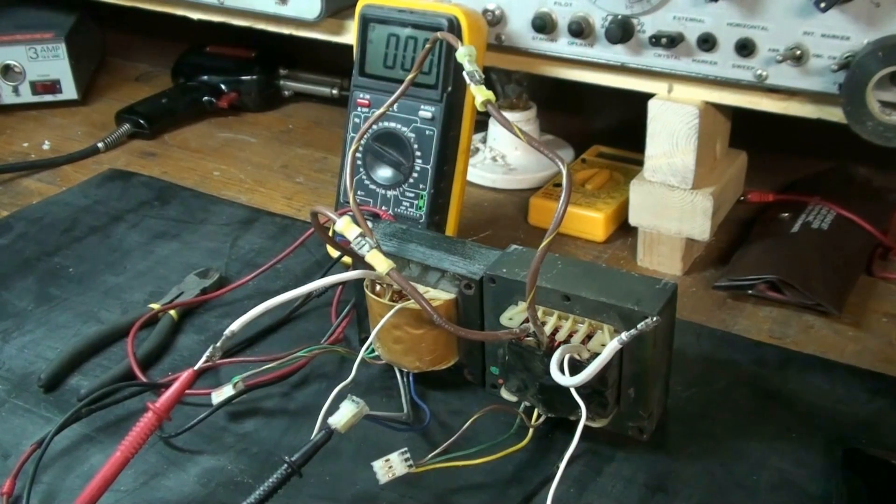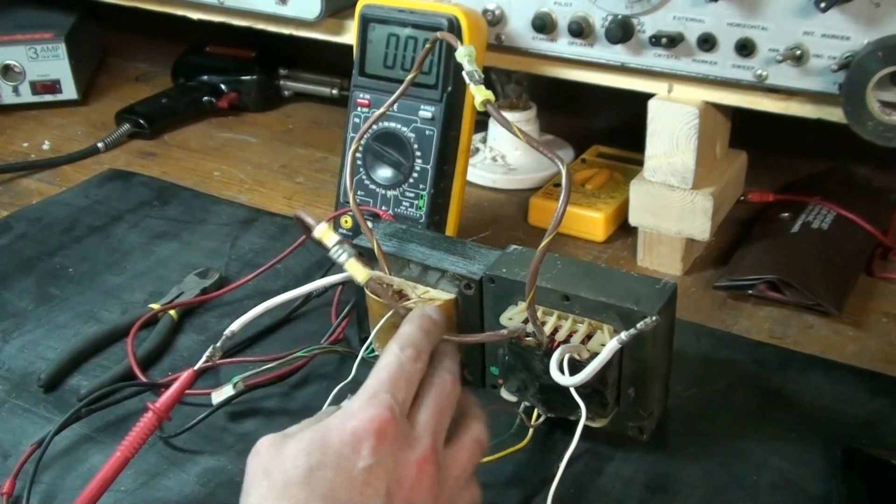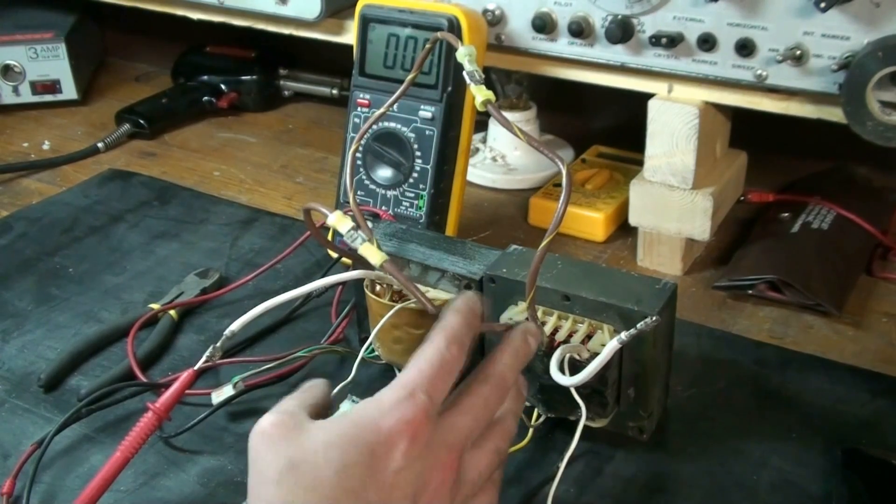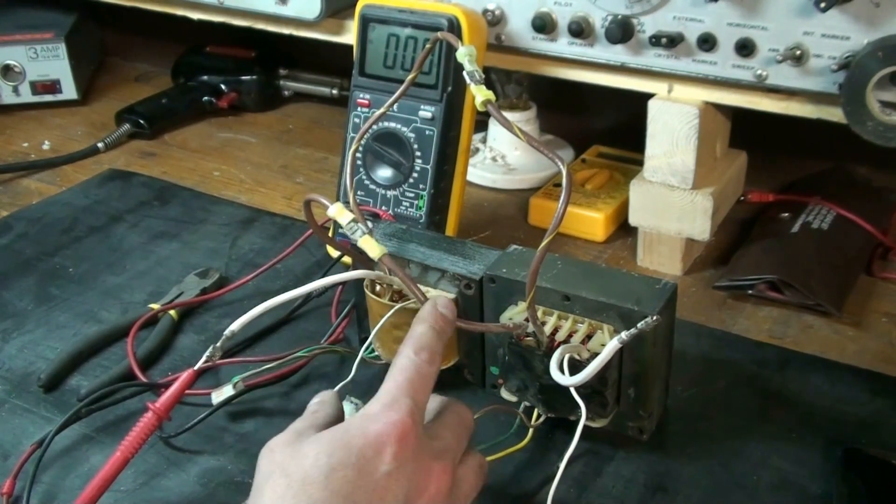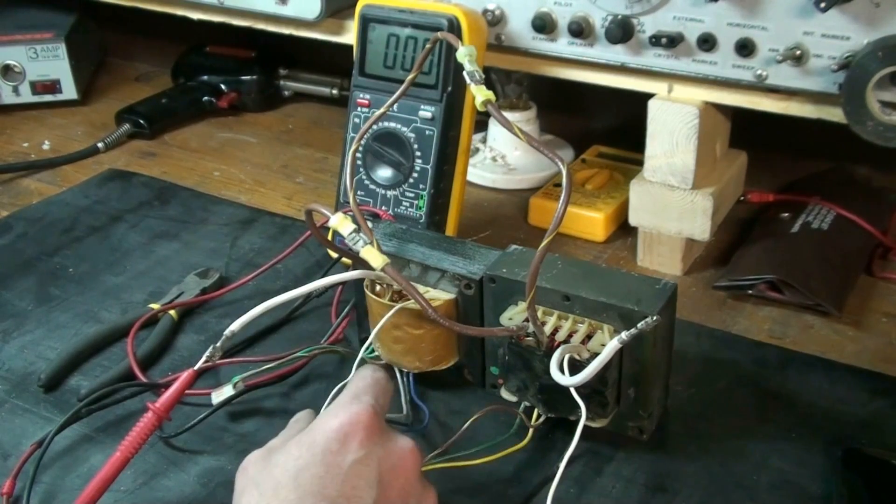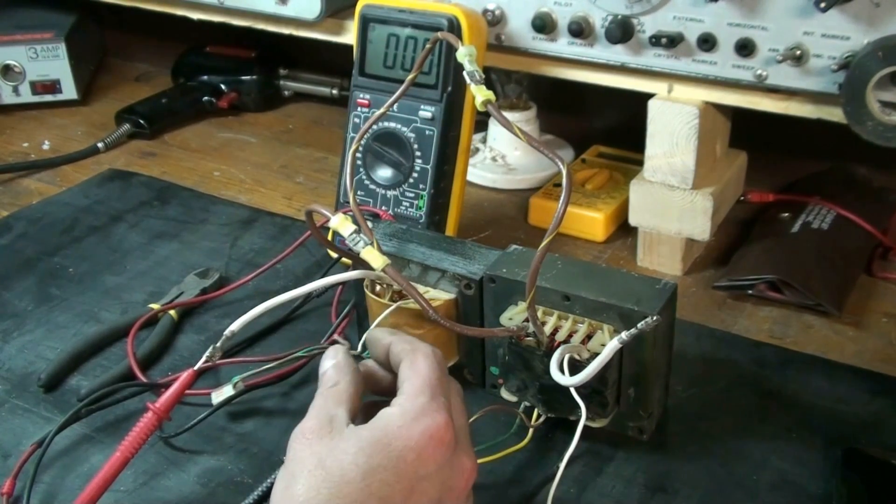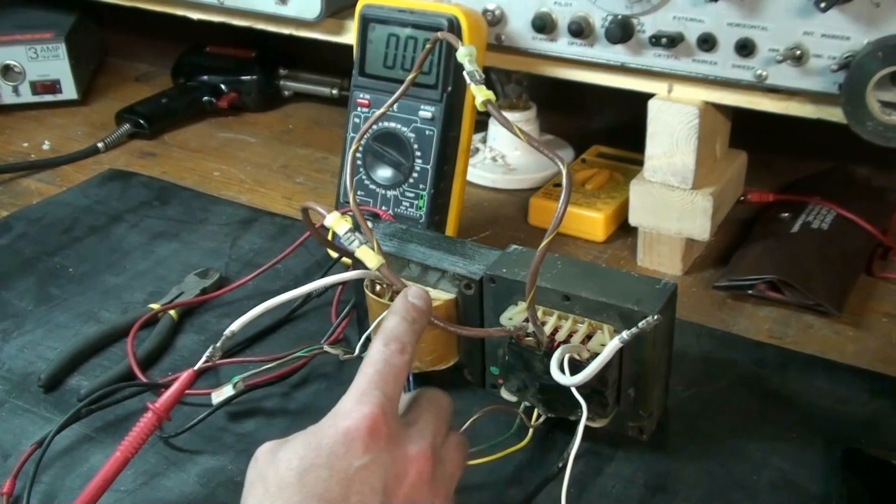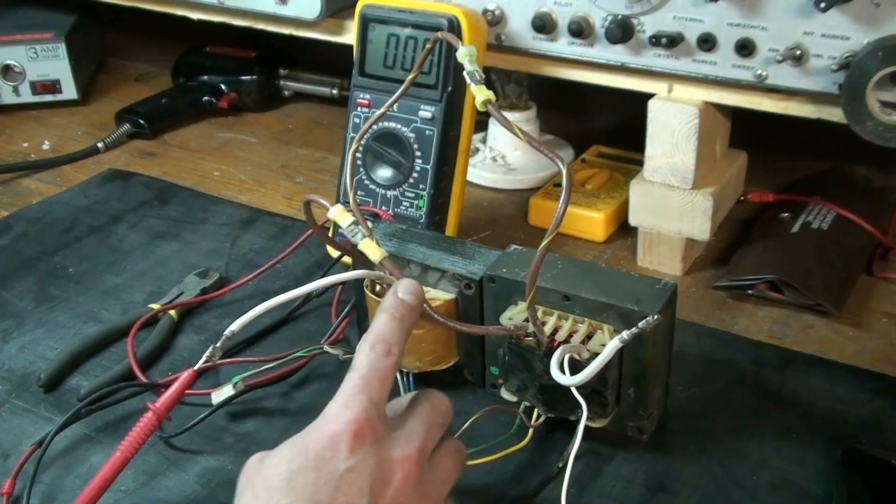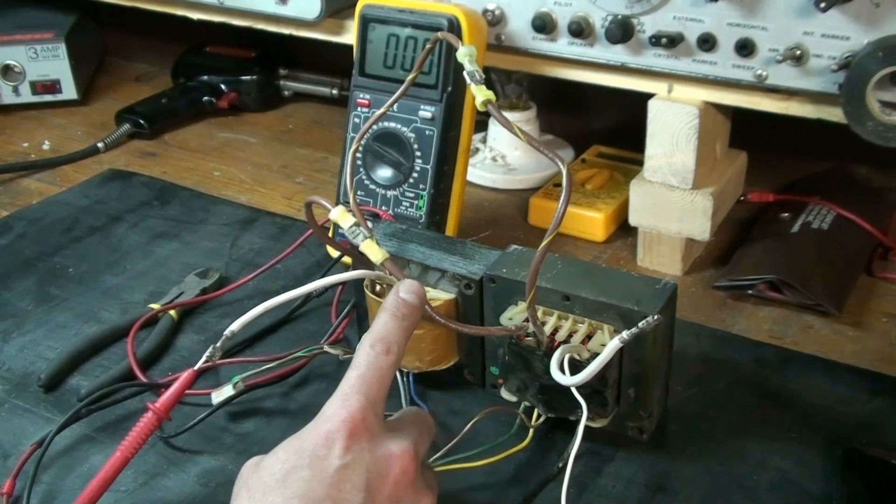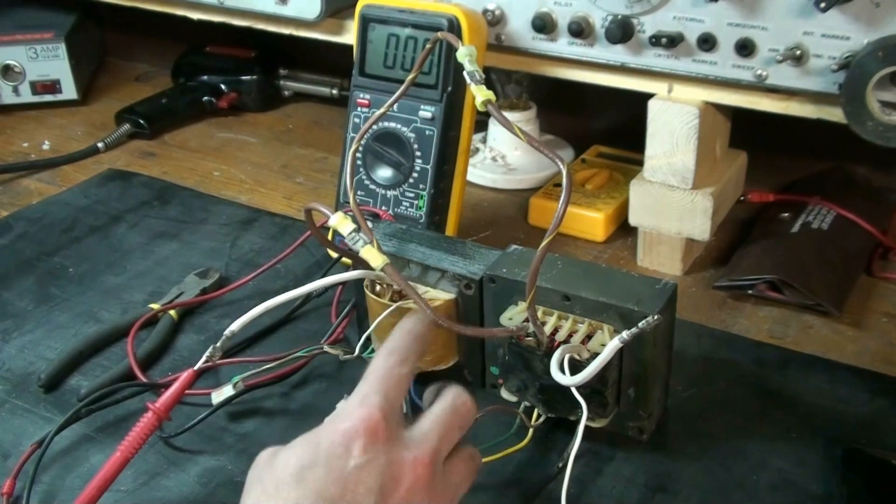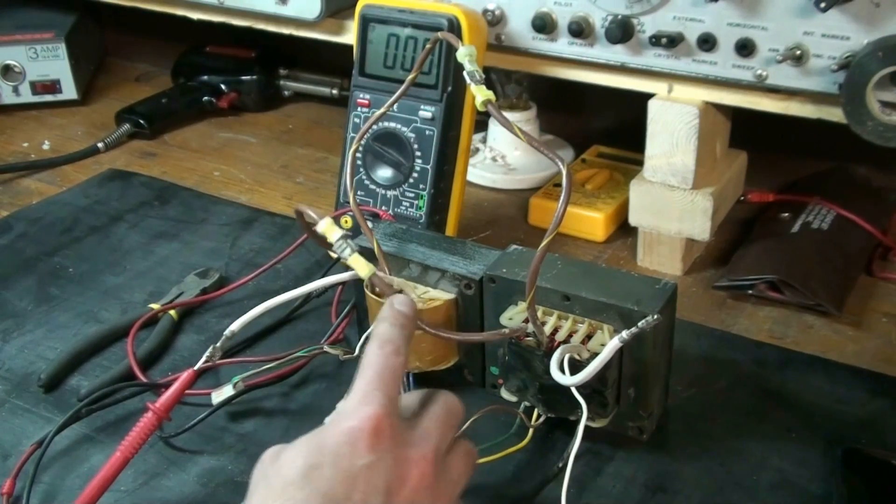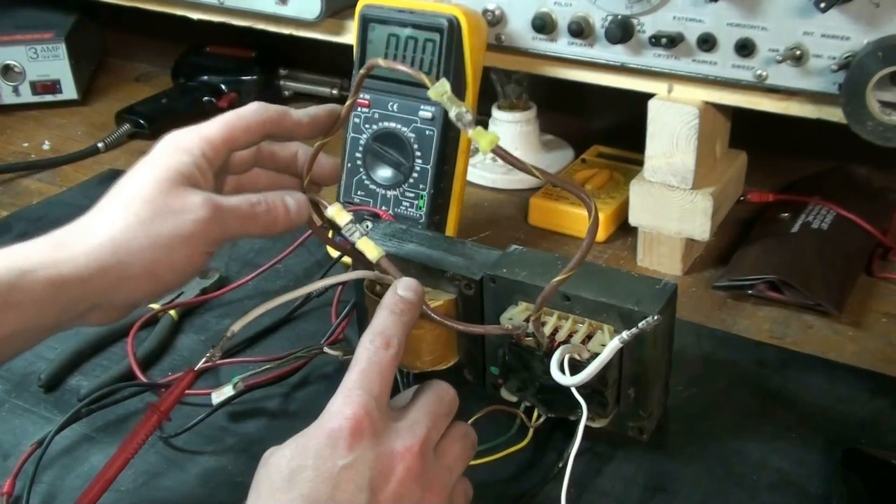Anyway, these are both different amperage outputs - one's 40 amp, one's 30 amp I believe. But they're both the same voltages. They both had 12 volt batteries in them and I believe the output is 32 volts out of the transformer, though that could just be the fuse rating.